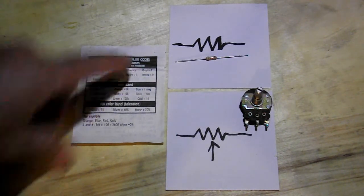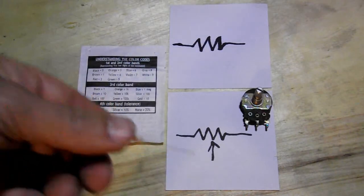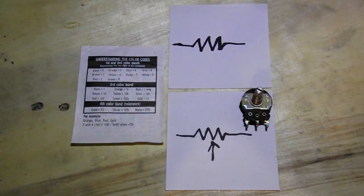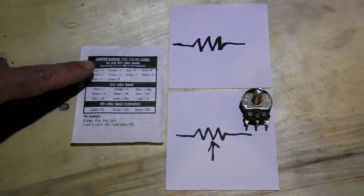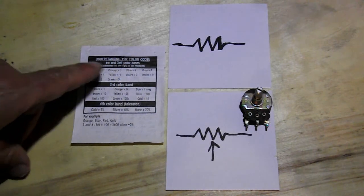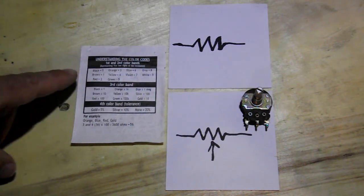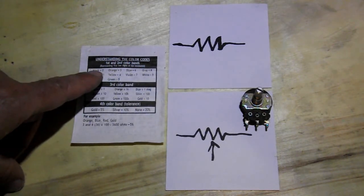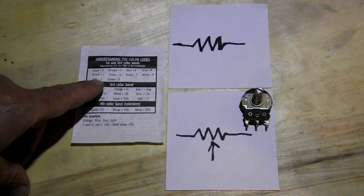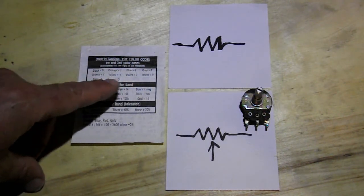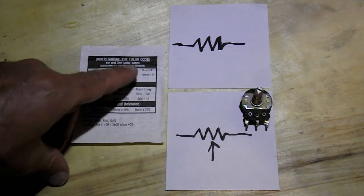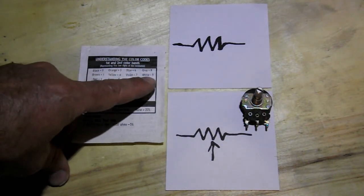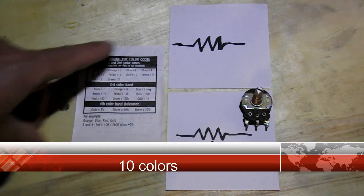The first and second colors, so here we have, in this case, a brown and a black. The first two are designated by ten colors. Black equals zero. Brown is one. Red is two. Orange is three. Yellow is four. Green is five. Blue is six. Violet is seven. Gray is eight. And white is nine. There's your nine colors you'll find on a resistor.